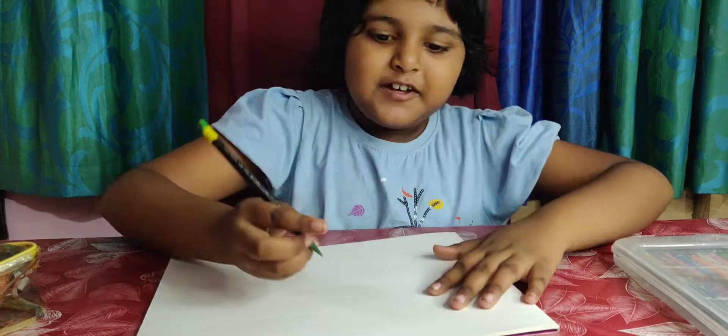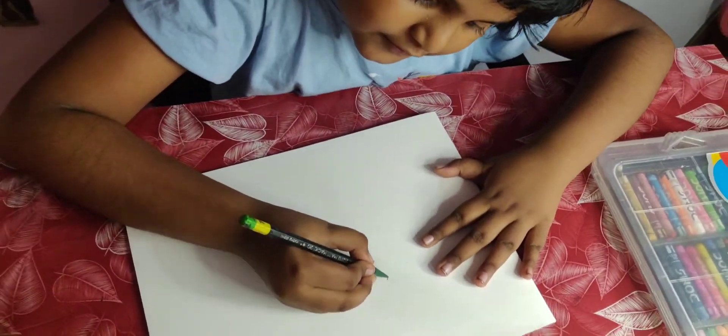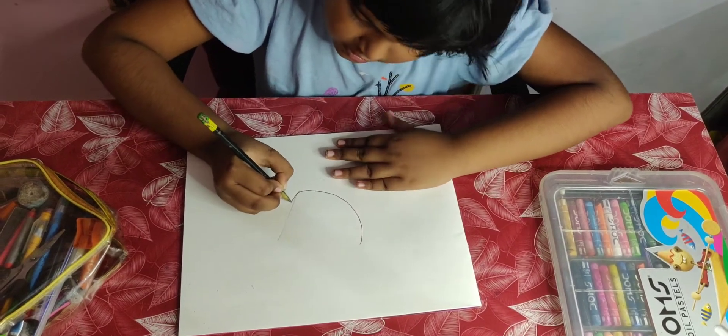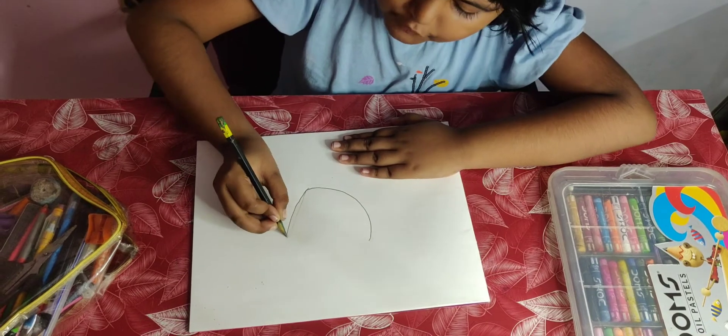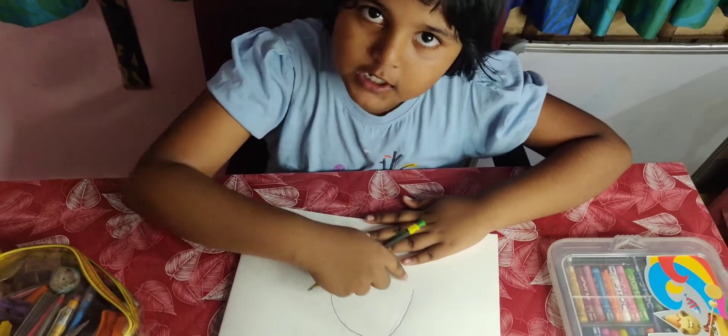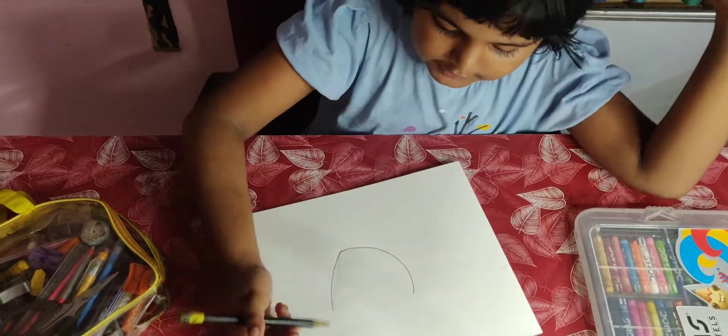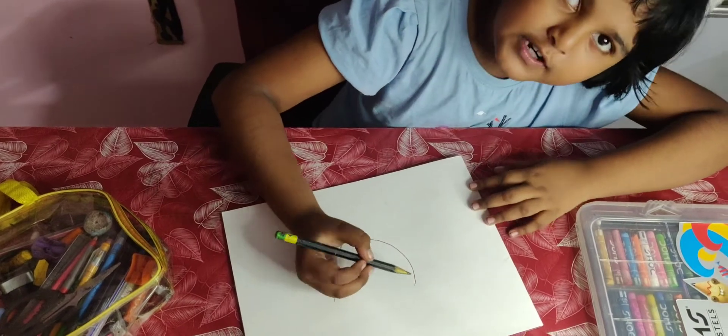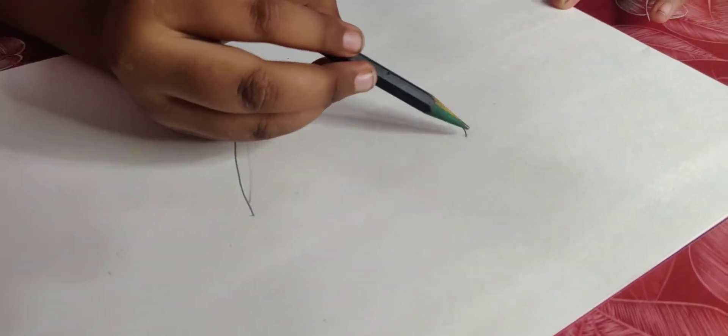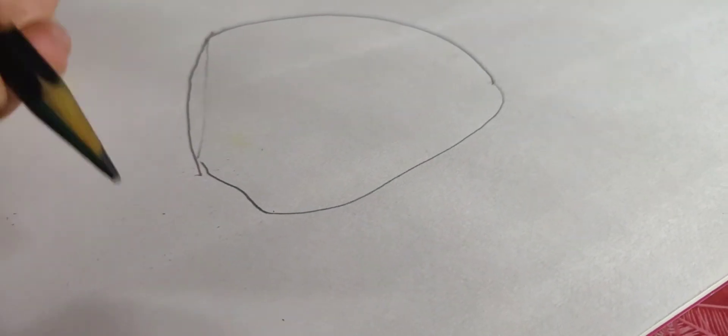Yes, you need to do one U. Little U of the owl. Okay, then we need to do like this. The top line we need to do like this. Yes, you know it.